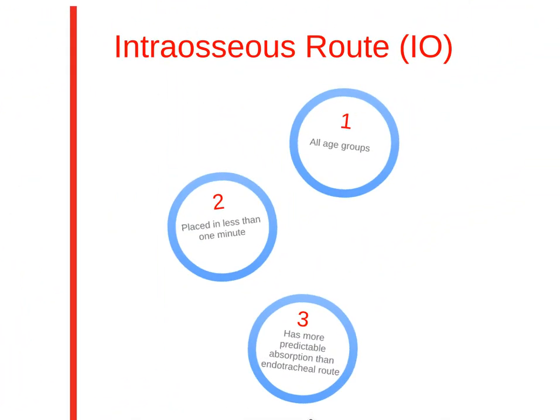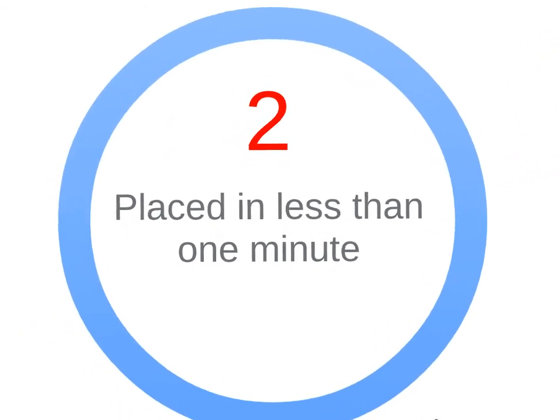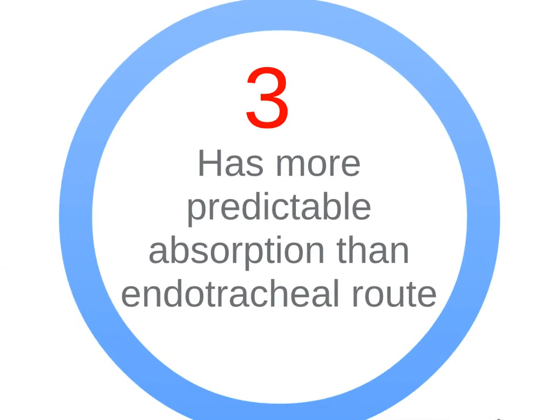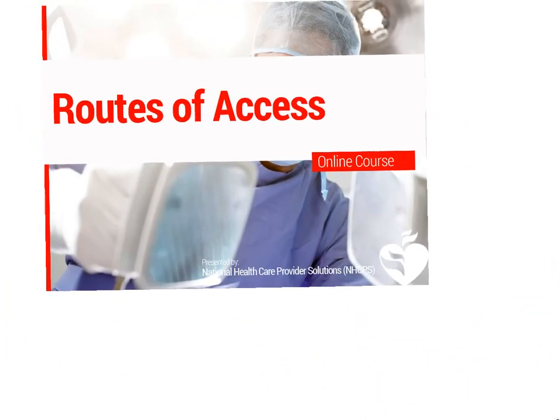Next, let's review the intraosseous route. Drugs and fluids can be delivered safely and effectively through the I.O. route if IV access is not available. I.O. access can be used for all age groups, can be placed in less than one minute, and has a more predictable absorption than the endotracheal route. That concludes our review of ACLS route of access.